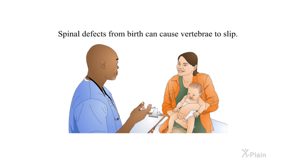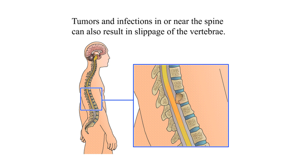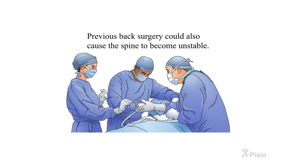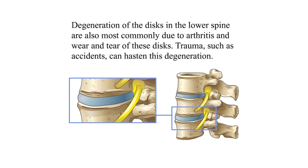Spinal defects from birth can cause vertebrae to slip. Also, a fracture or crack in the vertebra may cause it to lose its position. Tumors and infections in or near the spine can also result in slippage of the vertebrae. Previous back surgery could also cause the spine to become unstable. Injuries, as in a car accident, may damage the vertebrae and make them unstable. Degeneration of the discs in the lower spine is also most commonly due to arthritis and wear and tear; trauma such as accidents can hasten this degeneration.